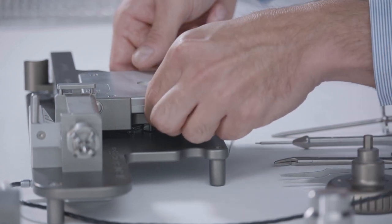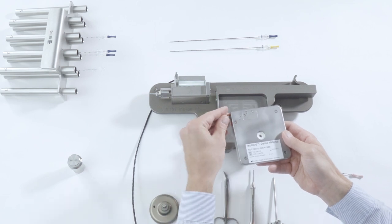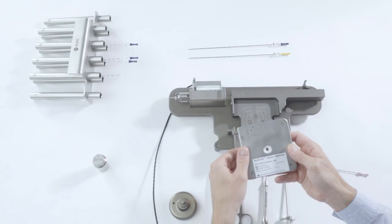After removing the knob, you can remove the magazine from the needle loading station. Screw the radiation protection cap on the magazine back on.